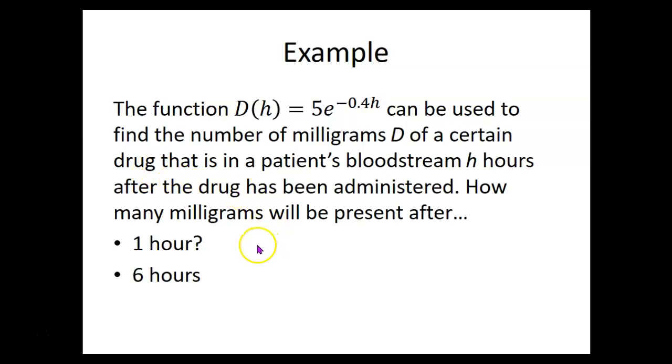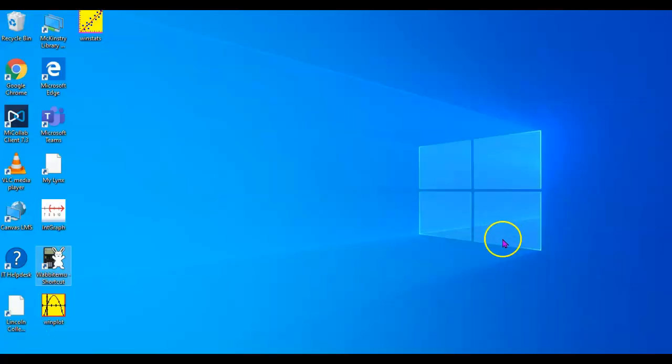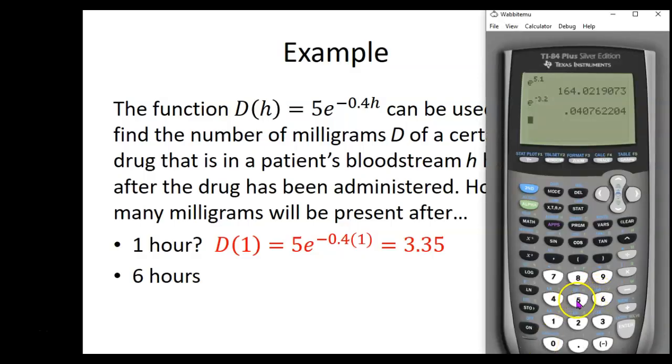So how many milligrams will be present after one hour? That means we're plugging one in for h. D of one would be five times e to the negative 0.4 times one. Let me show you how that looks on the calculator. We're taking five times e to the, in parentheses, negative 0.4 times one, close parentheses, and that's about 3.35. It's actually 3.35160023, but about 3.35.